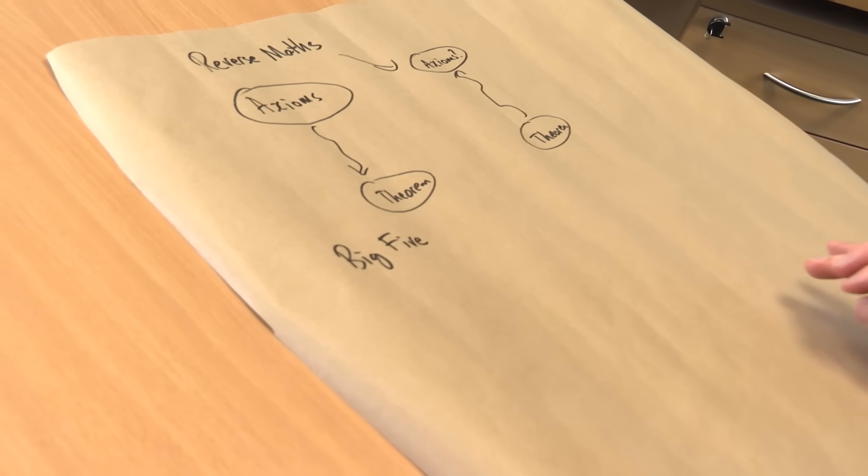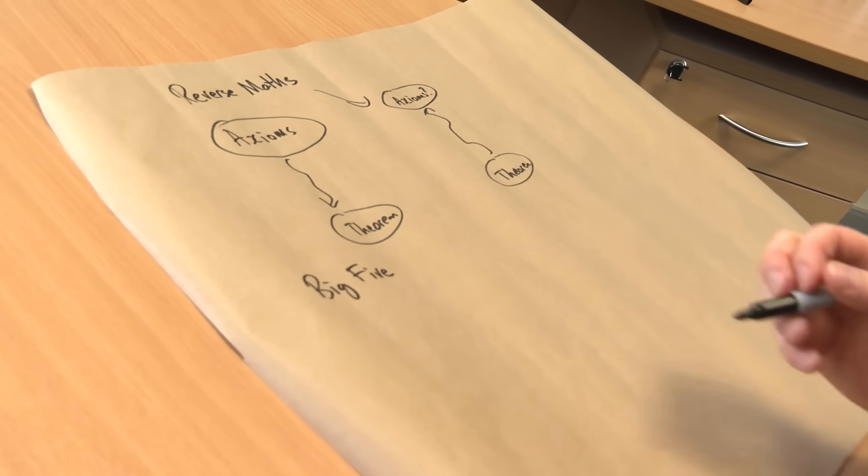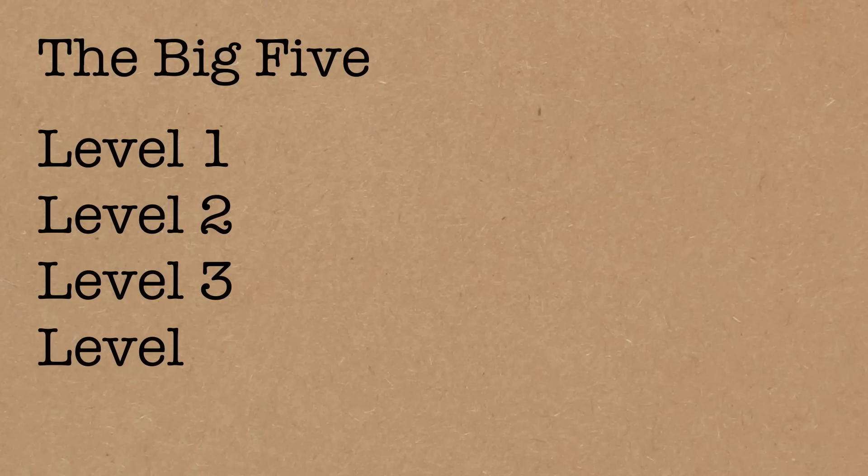What the people who study this, the reverse mathematicians, have come up with is this list of what they call the big five systems. These are basically five different axiom schemes for mathematics, really arithmetic, the number system. And it tends to be one of these which is necessary to prove whichever theorem you're interested in. So they've got technical names. I'm just going to call them level one, level two, level three, level four, level five.